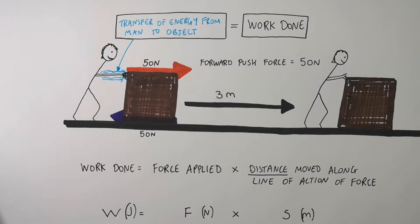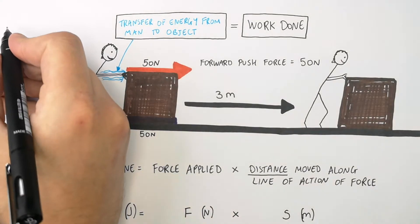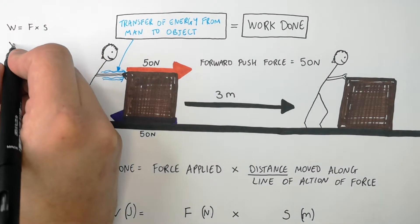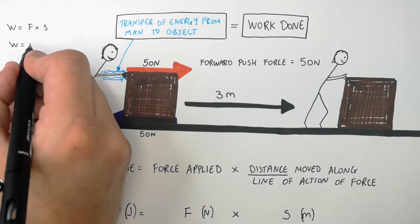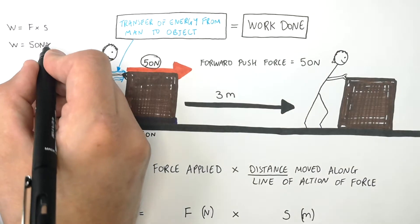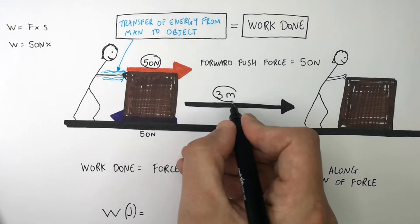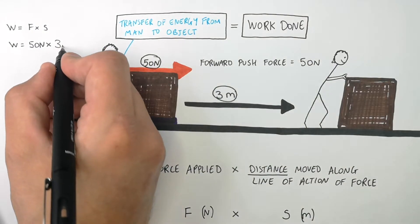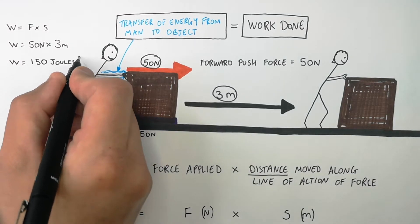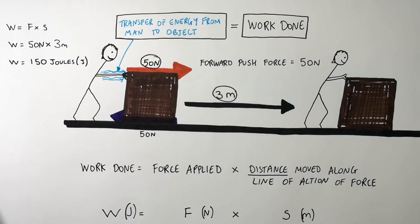To calculate the work done by this person, write the equation W equals F times s. Work done equals F, which is 50 newtons, times s, which is the distance, which is 3 meters. So the work done is 50 newtons times 3 meters, which is 150 joules. So 150 joules of energy was transferred to move the box 3 meters in that direction. That is the work done.